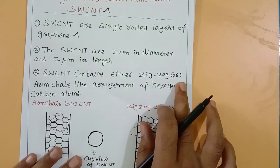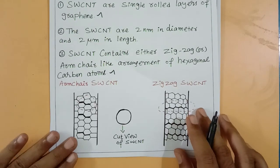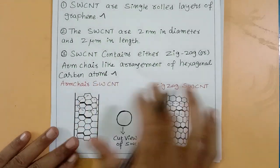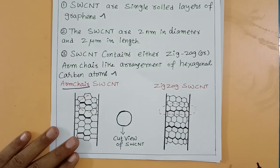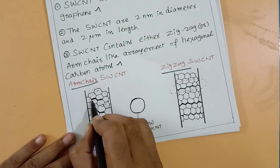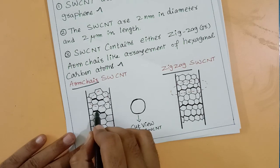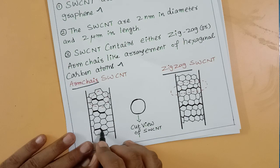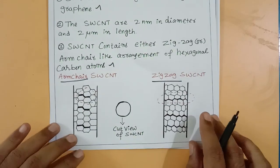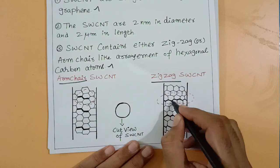Single-walled carbon nanotubes contain either a zigzag or armchair-like arrangement of hexagonal carbon atoms. In the armchair model, the hexagonal carbons are arranged like an arm chair. In the zigzag model, the hexagonal carbons are arranged in a zigzag pattern. These are the two arrangements of carbon atoms in single-walled carbon nanotubes.